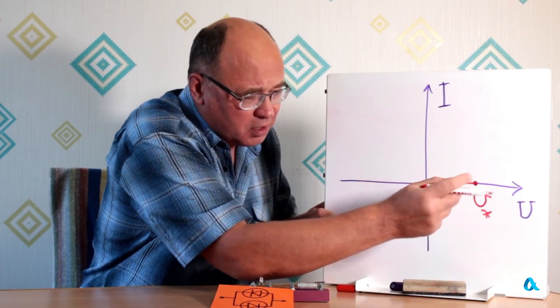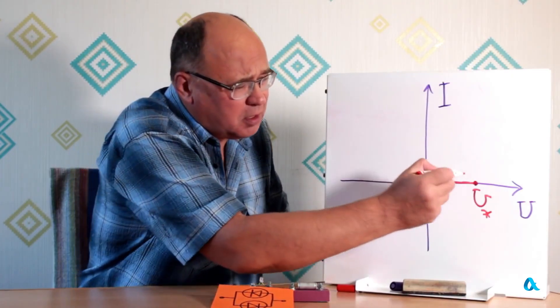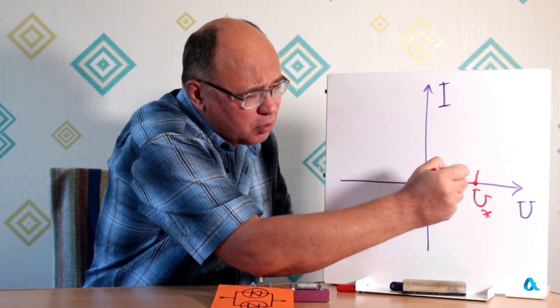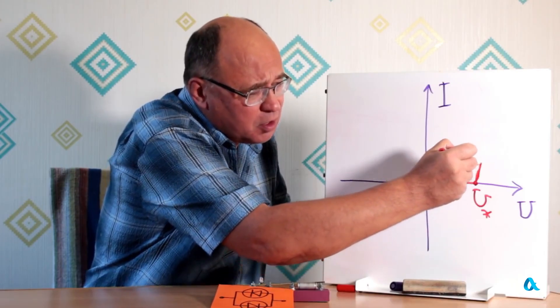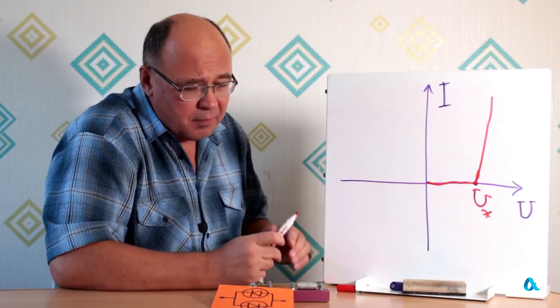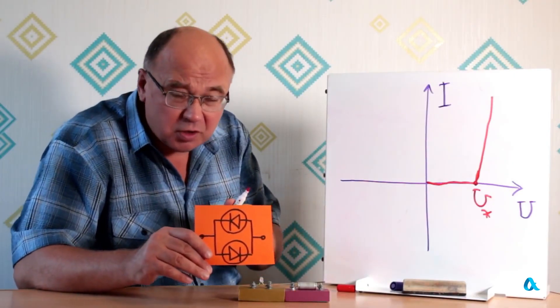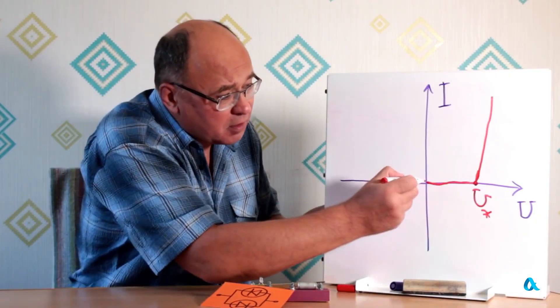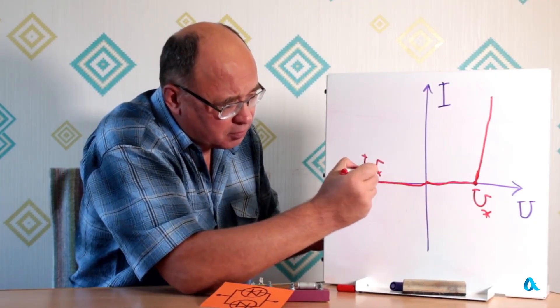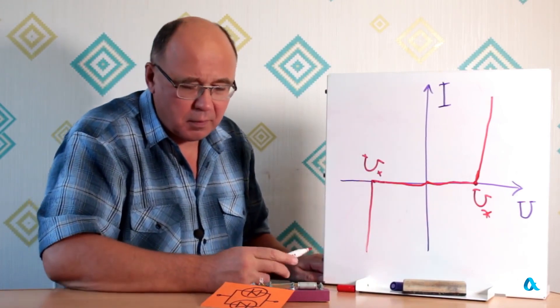We can consider it to be practically zero. But then upon reaching a certain value, I'll mark it with an asterisk, and for our LEDs it was around three volts, the diode turns on. Well, of course in reality the transition is smooth, but I'll draw it as if the current starts increasing very sharply. And with reverse connection, the second LED turns on in exactly the same way.